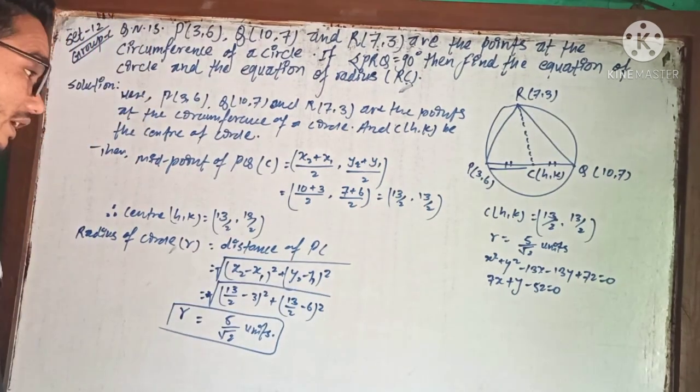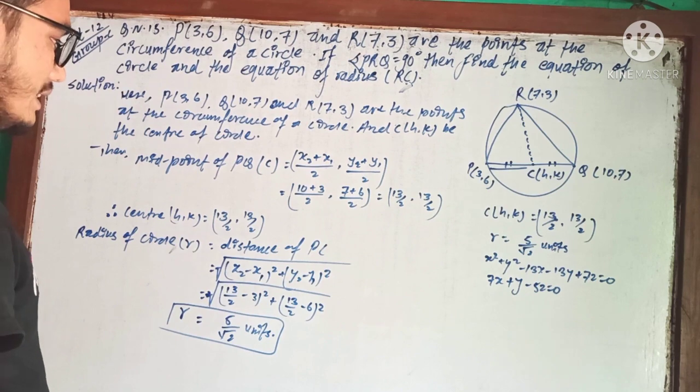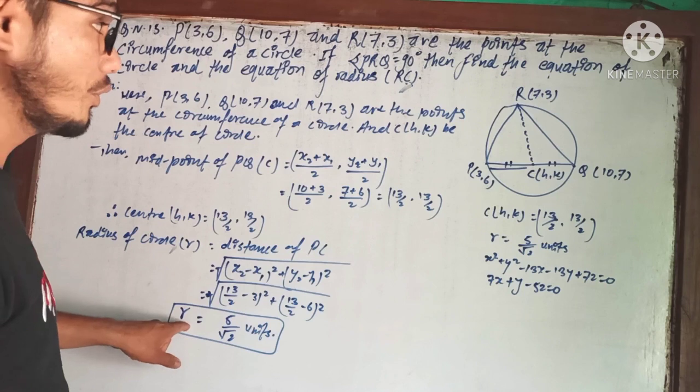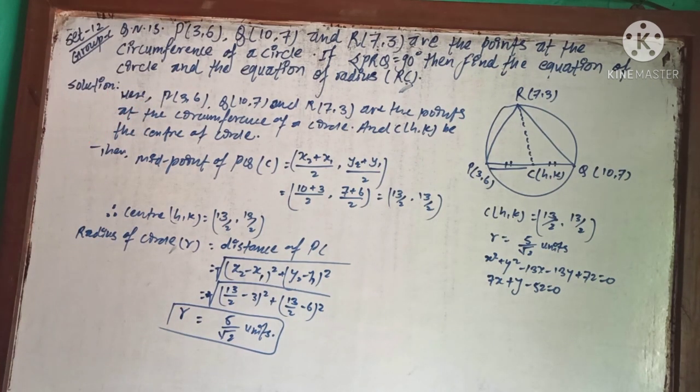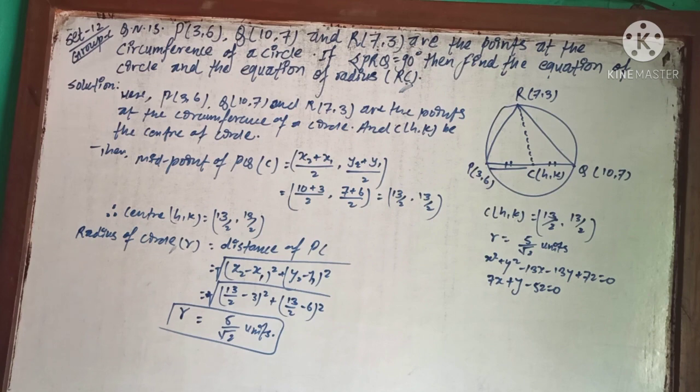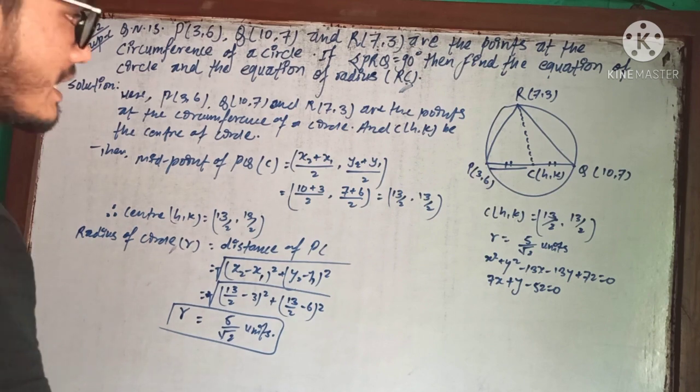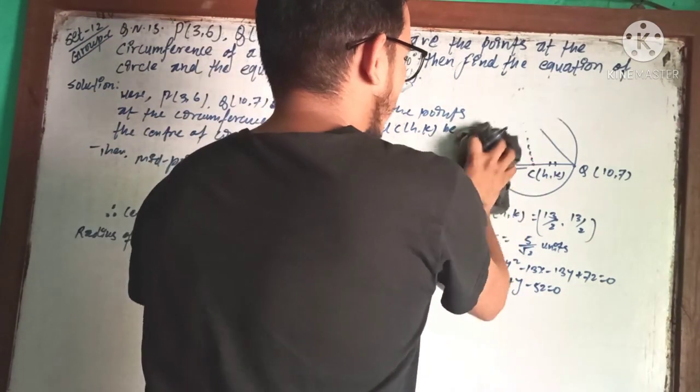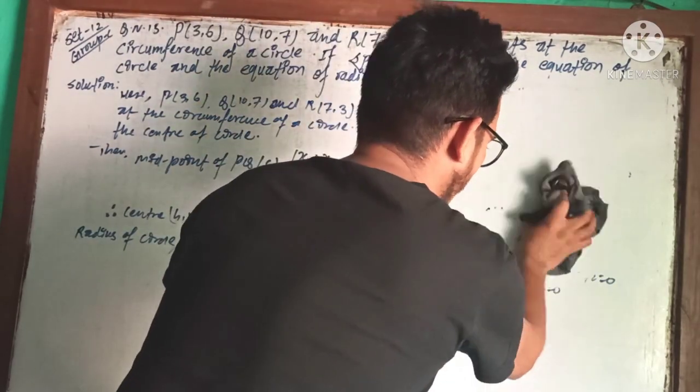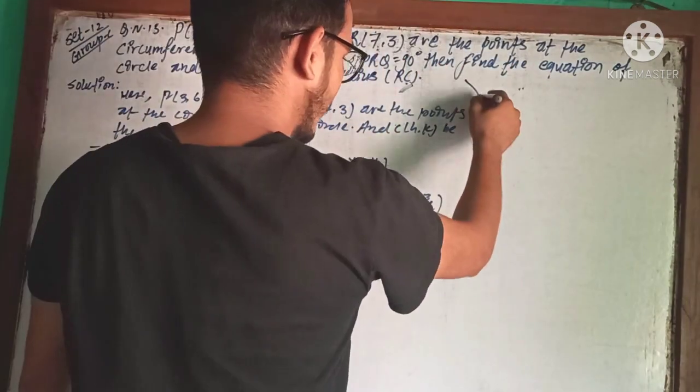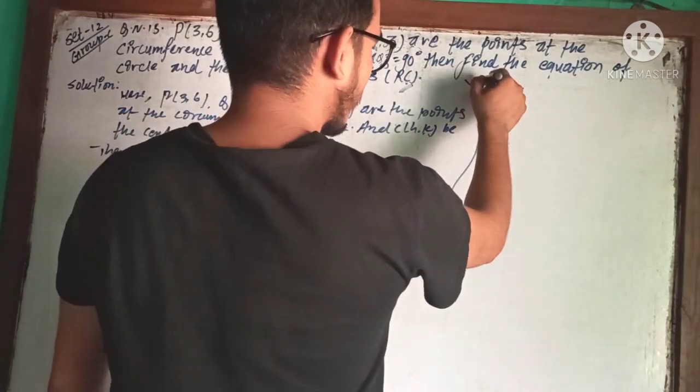Now let's find the equation of the circle. We have the center (h,k) equals (13/2, 13/2) and radius equals 5√2.